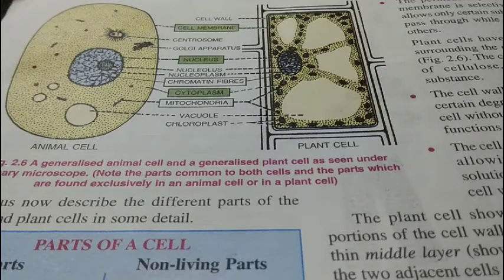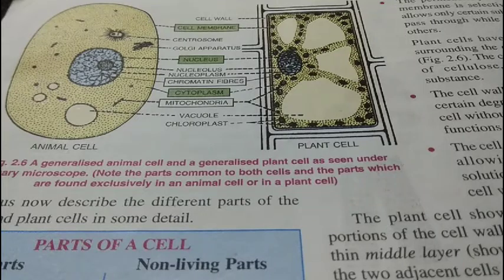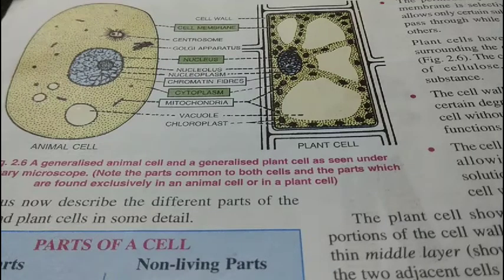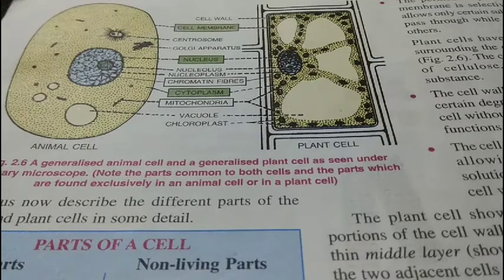The plasma membrane, the cytoplasm, and the nucleus are the three essential parts of a cell, while others are supplementary. The cell membrane covers the cell and acts as a selectively permeable membrane, allowing only certain substances to go in and out of the cell and preventing others.